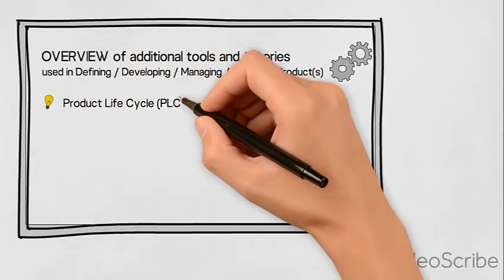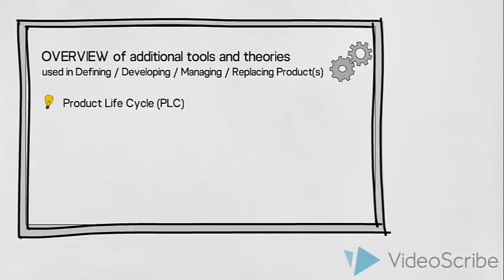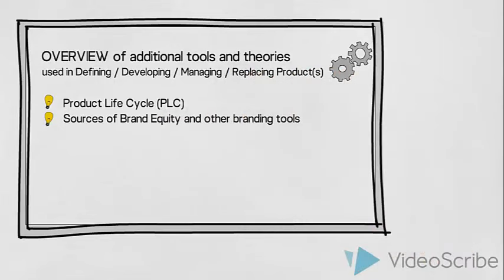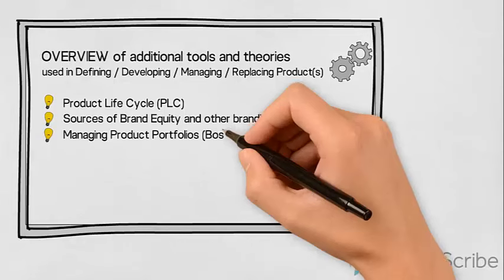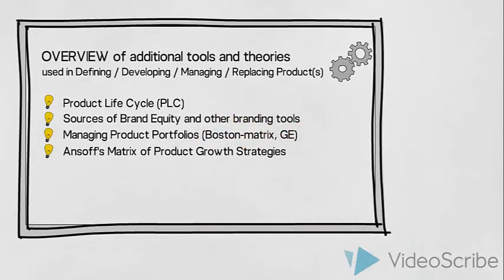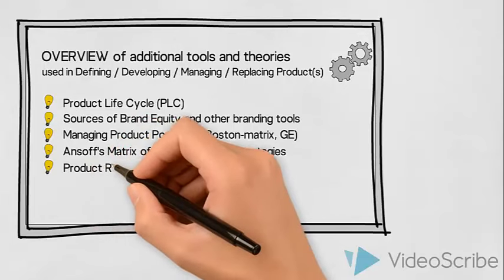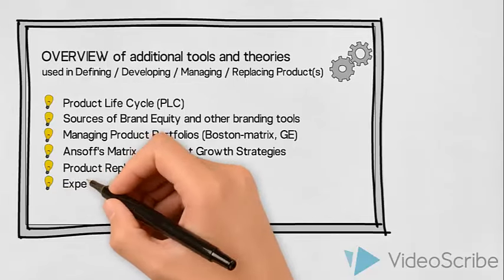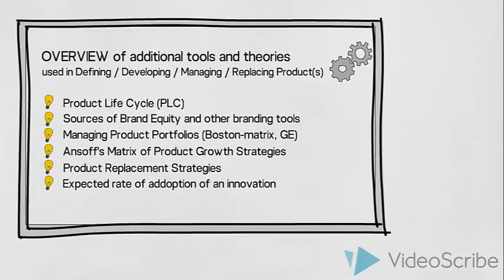We can look at where in the product lifecycle our product is and which strategic marketing objectives we have. We can investigate brand equity and use other branding tools. If we are dealing with a line of products, we could benefit from using the Boston or GE model. When considering how to facilitate growth, we can use Ansoff's product growth matrix. When talking about replacing existing products, we would benefit from looking at some different product replacement strategies. And finally, if we are developing or introducing a new product, an innovation, we should look at how some different characteristics of our innovation will affect how quickly we can expect it to be adopted by the market.